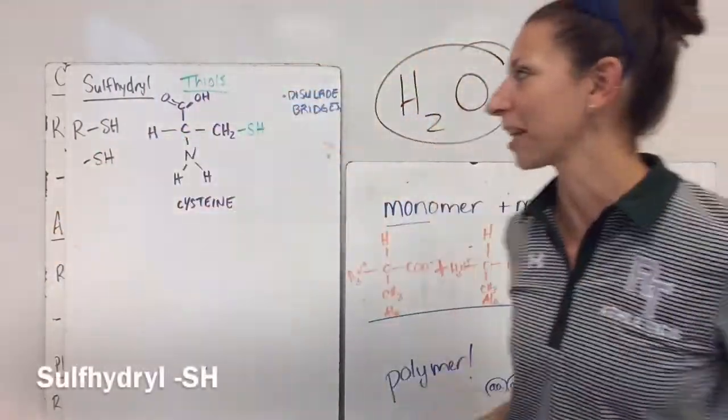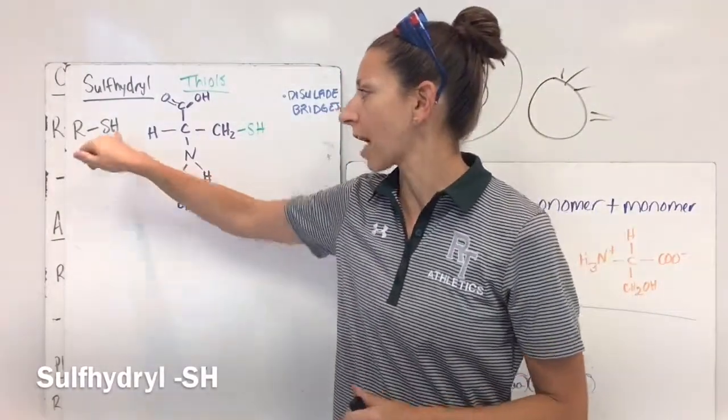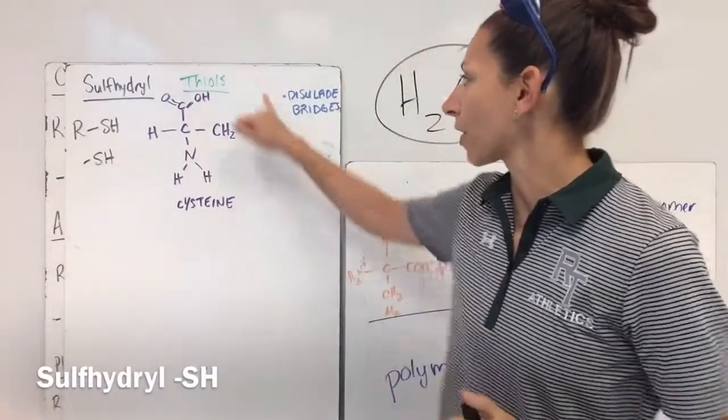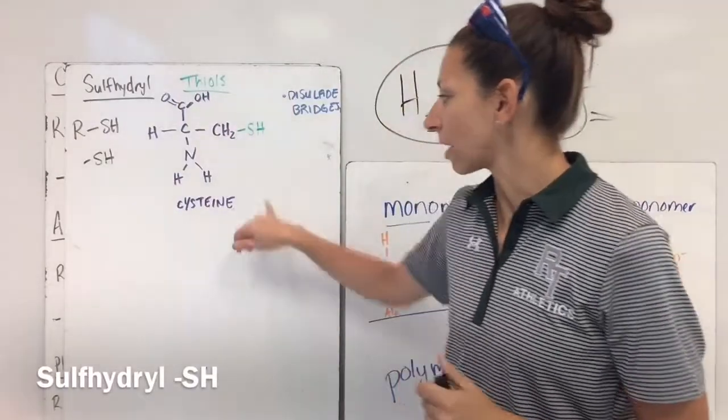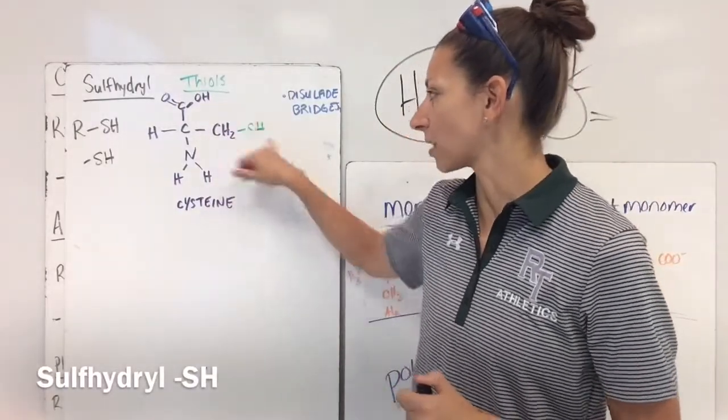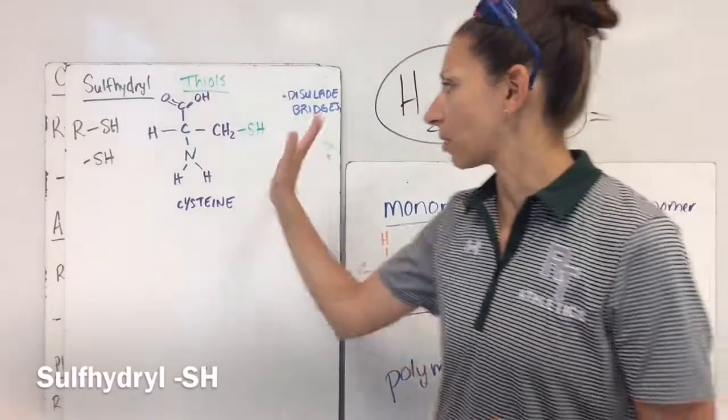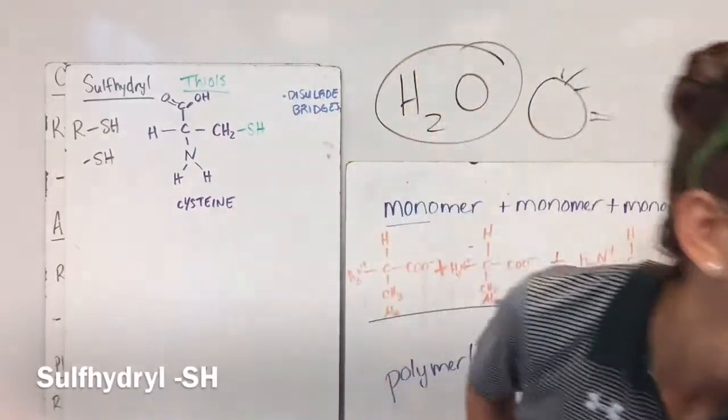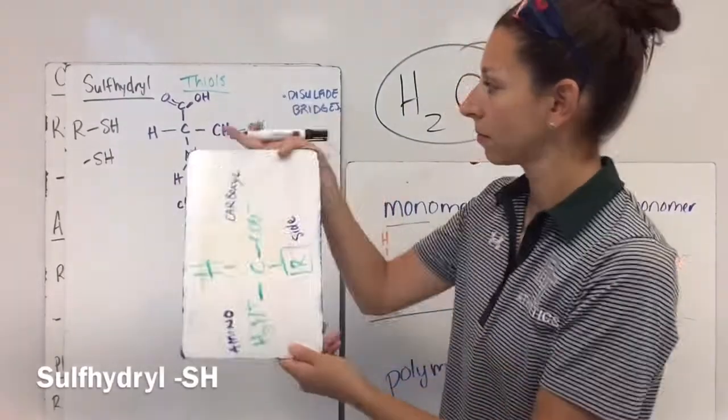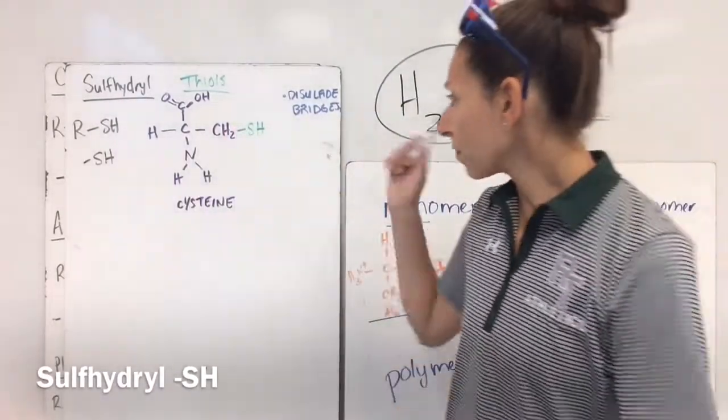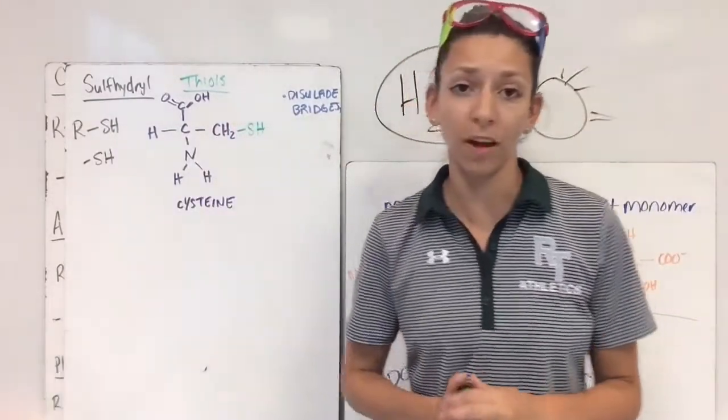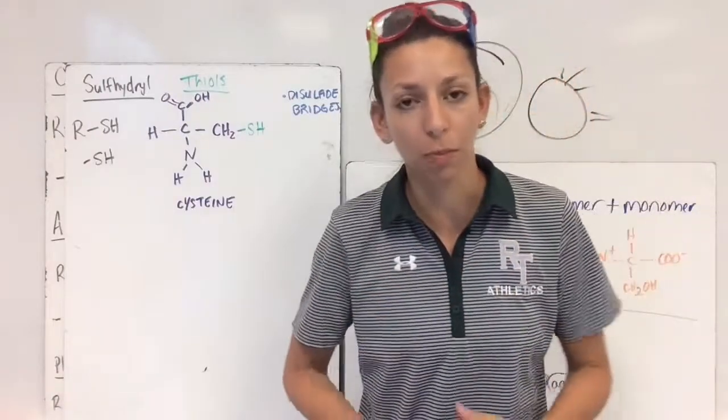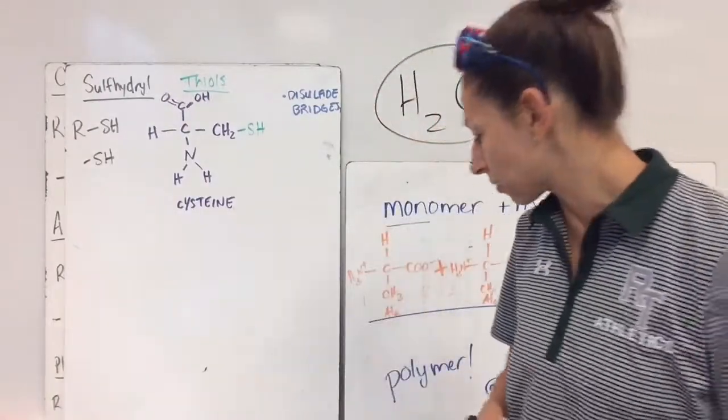Finally, we have one last one. Our sulfhydryl group. This is our side chain attached to a sulfur and a hydrogen. Our thiols is our class. And our example is cysteine, which is one of our amino acids that has a special sulfur group on the end of it. You can notice our amino acid structure if we flip it on its side a little bit, as we see here. Okay. These are really important in forming our disulfide bridges, which can make really strong bonds in proteins, which we will read about in our text as well.